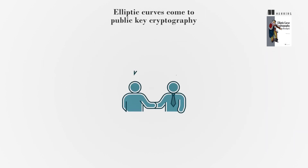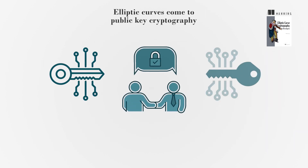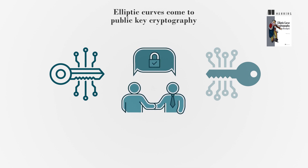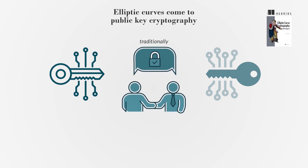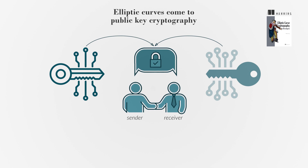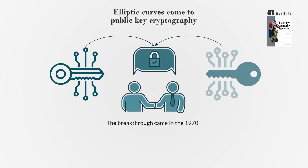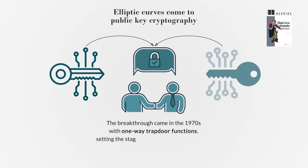The emergence of elliptic curves in public-key cryptography represents a recent transformation in securing sensitive information. Traditionally, secure communication relied on shared secret keys between sender and receiver, but key transmission posed challenges. The breakthrough came in the 1970s with one-way trapdoor functions, setting the stage for public-key cryptography.